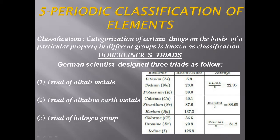Why did he call them alkaline earth metals? Because all these elements are metals that form basic oxide. These oxides are alkaline in nature and exist in the earth's crust layer — we get them in the form of oxides. That's why he called them alkaline earth metals. These metals are electropositive and their valency is +2.